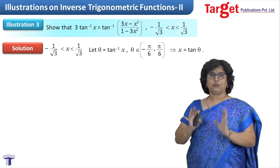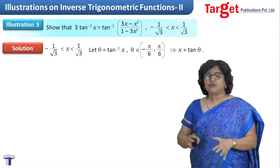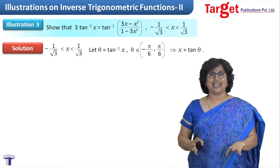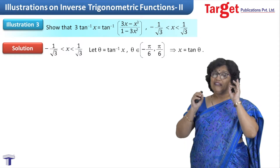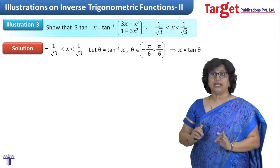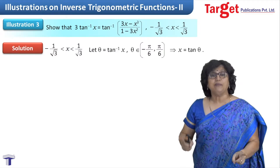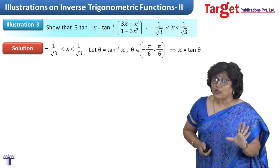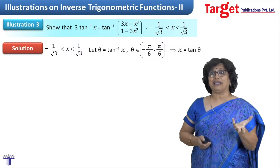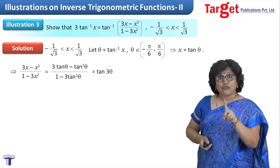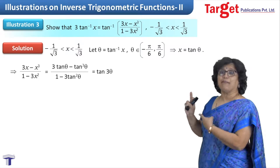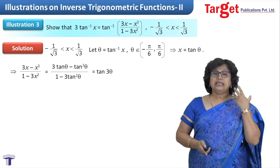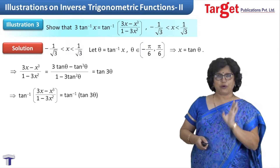This is a typical mistake you observe everywhere, and when you see it in many places you start believing it and stop questioning it. Please revise your concepts. x = tanθ can never imply θ = tan⁻¹x; it is θ = tan⁻¹x that implies x = tanθ. Since x ∈ (-1/√3, 1/√3), θ goes to the interval (-π/6, π/6). Taking tan on both sides gives x = tanθ, which I now substitute into (3x - x³)/(1 - 3x²).